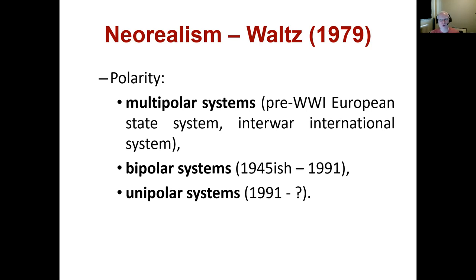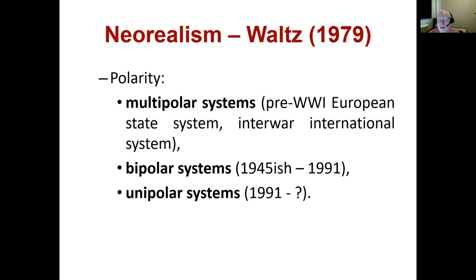A bipolar system has only two great powers. This describes the Cold War period — a historically rare configuration. From around 1945 to the collapse of the Soviet Union, there were two great powers: the US and the USSR. This was a period of two great powers, and based on balance of power theory, we'd expect different patterns of behavior in a bipolar era compared to a multipolar one.